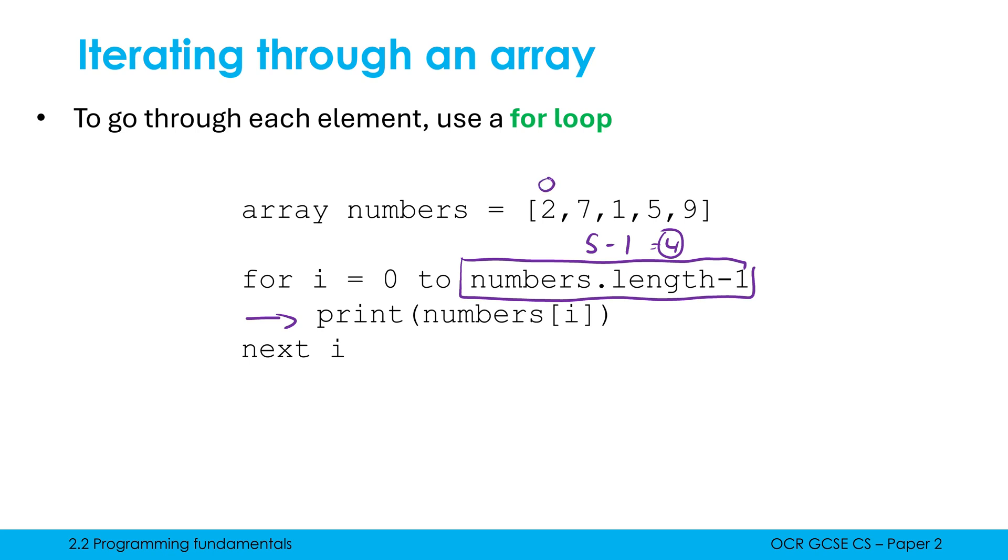This matches up to our index numbers in our array. So the first time it iterates, we're printing numbers index zero. That's why we get two outputted on screen. Next time round, we're printing numbers index one. That's why we get seven printed on screen, then it's index two, we get one, and it's index three, so we get five, then it's index four, so we get nine. And then because of this code here, we stop once I hit five, because we're going up to four only.